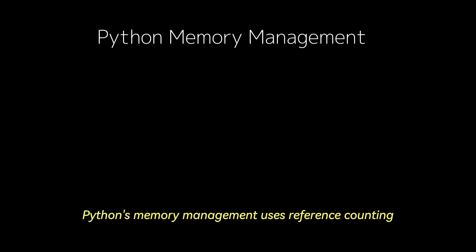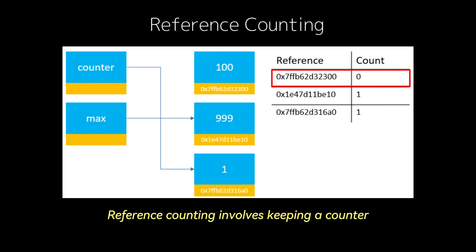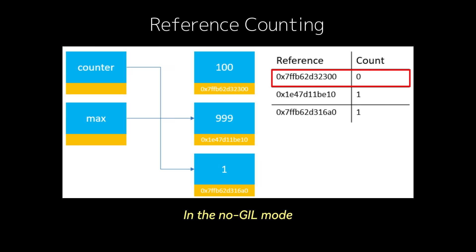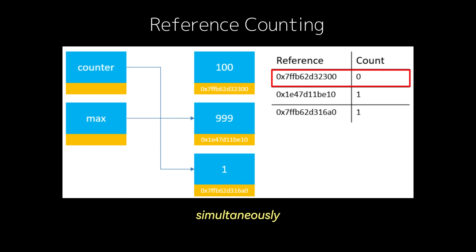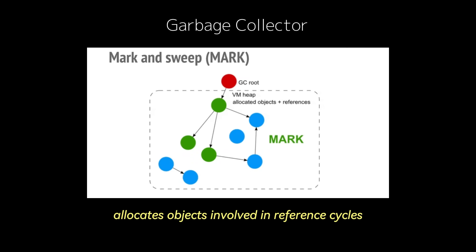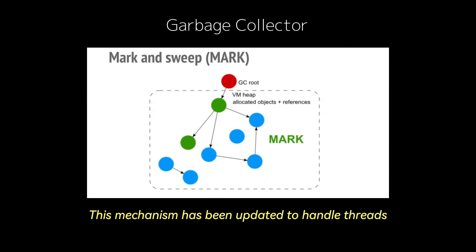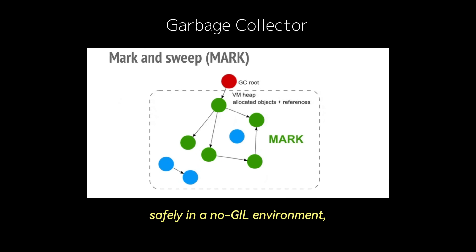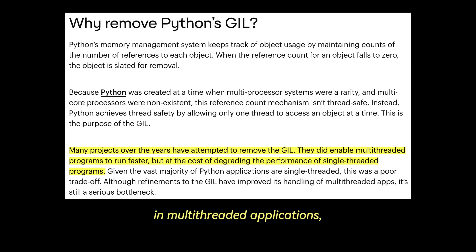Python's memory management uses reference counting and cyclic garbage collection to manage object lifetimes. Reference counting involves keeping a counter for every object that tracks how many references point to it; when the count drops to zero, the object is deallocated. In the no-GIL mode, these counters are updated using atomic operations to ensure thread safety when multiple threads modify reference counts simultaneously. Python's garbage collector identifies and deallocates objects involved in reference cycles — for example, two objects referencing each other with no external references. This mechanism has been updated to handle threads safely in a no-GIL environment, ensuring that detection and deallocation of cyclic references do not lead to race conditions or corruption.